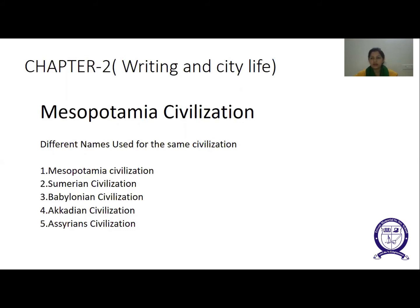Different names are used for the same civilization: Mesopotamian civilization. The name Mesopotamia is derived from the Greek words — Mesos, meaning middle, and Potamos, meaning river. So Mesopotamia means the land between two rivers, and the rivers' names are the Euphrates and the Tigris.